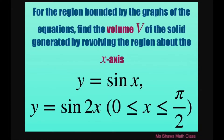Hi everyone. For the region bounded by the graphs of the equations y equals sine of x and y equals 2 minus sine of 2x, we're going to find the volume of the solid generated by revolving the region about the x-axis. We're also restricted so that x is between 0 and pi divided by 2.